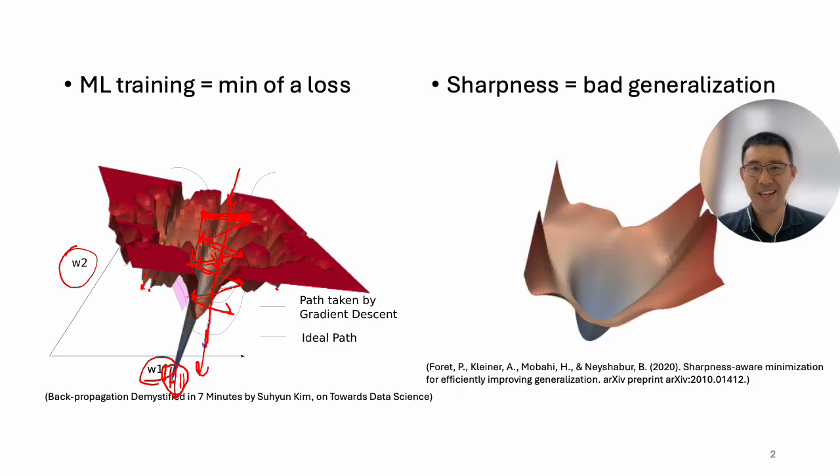So we think from literature that sharpness equals to bad generalization. So the author of the SAM papers actually said, well, what if we have a very smooth loss function, and by doing this, we can generalize our results much better.